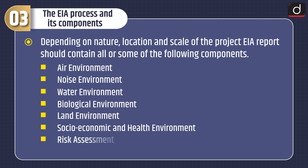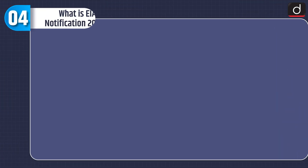The EIA report components include: air environment, noise environment, water environment, biological, land, socio-economic and health environment, risk assessment, and environment management plan.